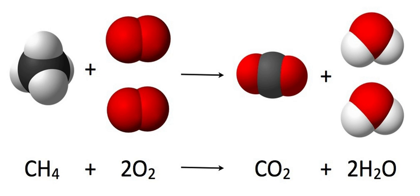An ionic equation is a chemical equation in which electrolytes are written as dissociated ions. Ionic equations are used for single and double-displacement reactions that occur in aqueous solutions.